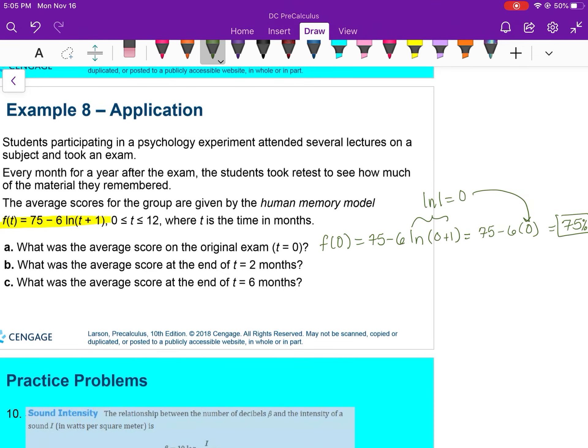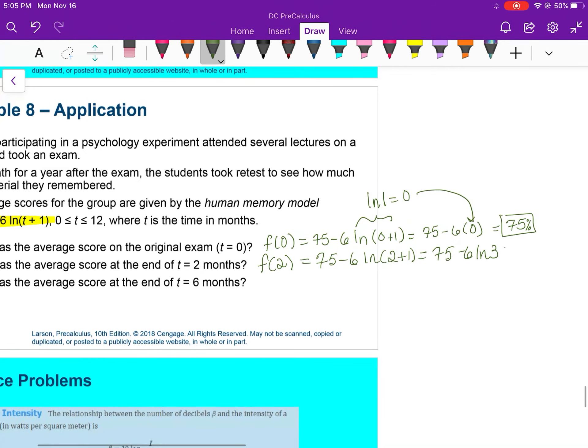And then I would plug in and find f of 2, and it's 2 plus 1. I would go to my calculator. I'm going to go ahead and set up the next one, and then I'll put my calculator to use here. So 75 minus 6 ln of 3 is about 68.4%. So two months passed and you've already forgot about 7% of the information. So let's see what happens at 6 months.